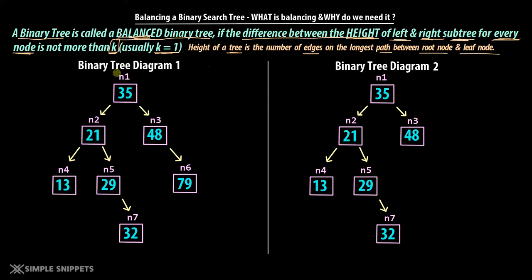We have two binary tree diagrams, and both of them are binary search trees. We are more interested in binary search trees because a BST has many practical applications due to the property where for every node the left child will always have a smaller value and the right child will have a greater value. Both diagrams are structurally binary trees, but BSTs have this extra property.